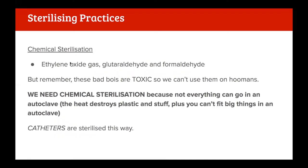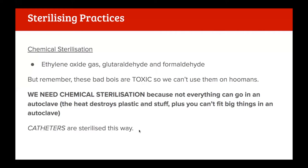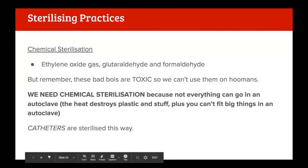We also use chemical sterilization with ethylene oxide gas or glutaraldehyde or formaldehyde solutions, though these are very toxic and can't be used on humans. Chemical sterilization is needed for equipment like plastic or rubber items that can't go in an autoclave. For instance, intravenous catheters that go into arteries and into the heart must be very sterile. Urinary catheters also require chemical sterilization, as they are associated with a huge burden of nosocomial infection - urinary tract infections secondary to catheterization are the most common type of nosocomial infection.